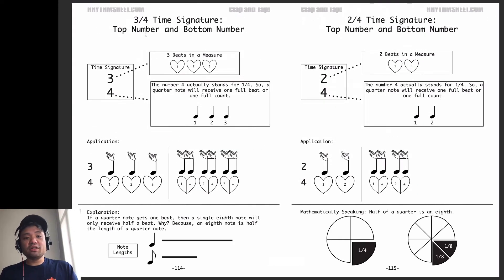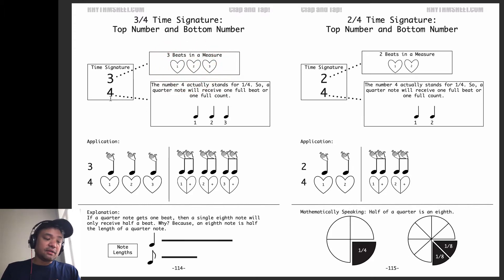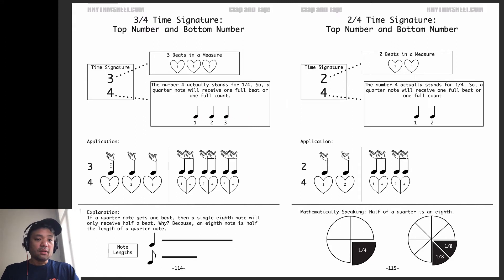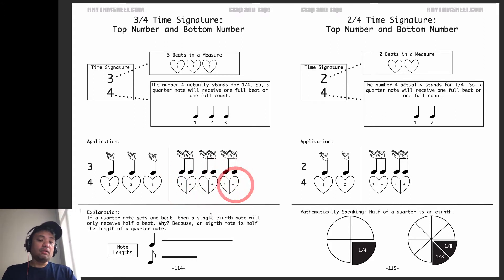Next, 3/4 time signature — top and bottom number. In 3/4, the top number tells us how many beats are in a measure — there's only 3 beats per measure: 1, 2, 3. The bottom number is still 4, so the quarter note still gets the count: 1, 2, 3. In application, for quarter notes: 1, 2, 3. And since eighth notes are half of a quarter note, we split the beat in half: 1-and, 2-and, 3-and.